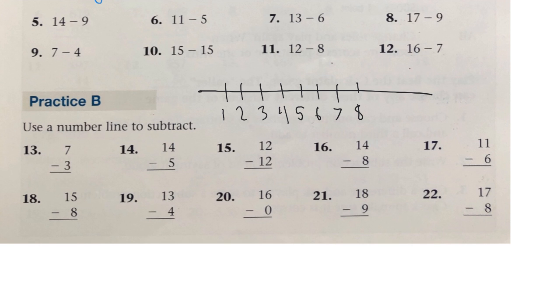Number 13 says 7 minus 3. So we're taking 3 away. 1, 2, 3, 4. So 7 minus 3 is 4.